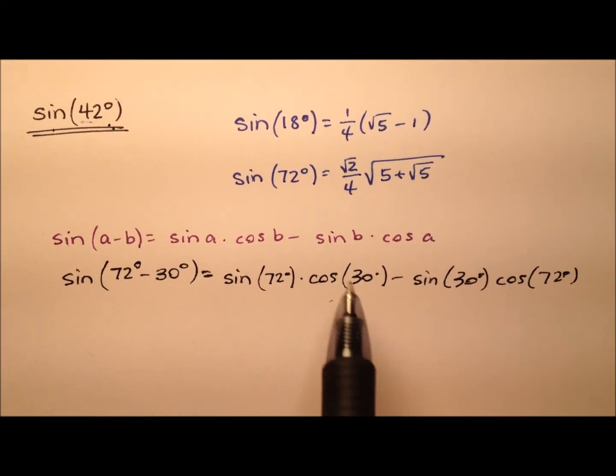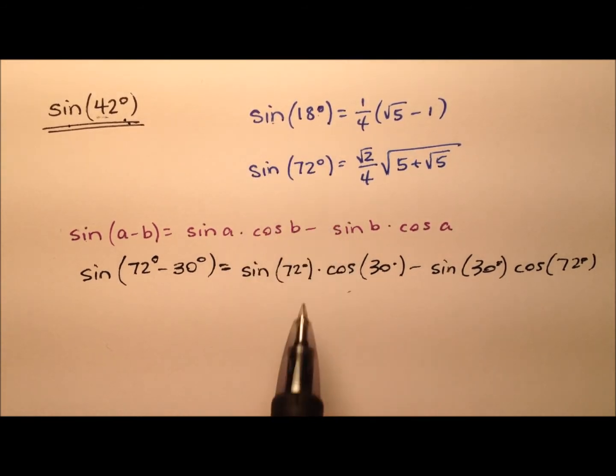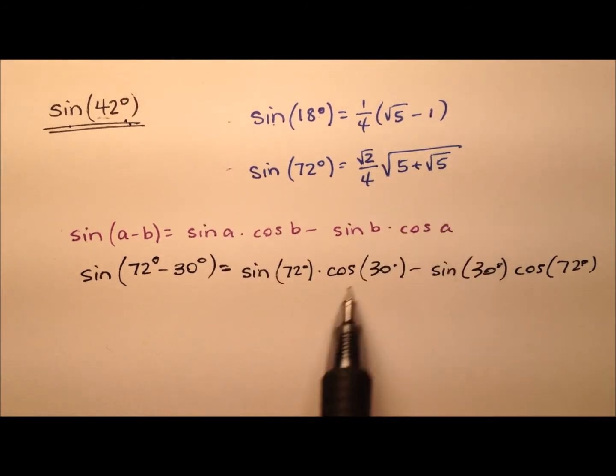And you'll see up top here, we have a couple of helper values, so it's the sine of 18 degrees and the sine of 72 degrees, and I'm using these two values because we need them, first of all.